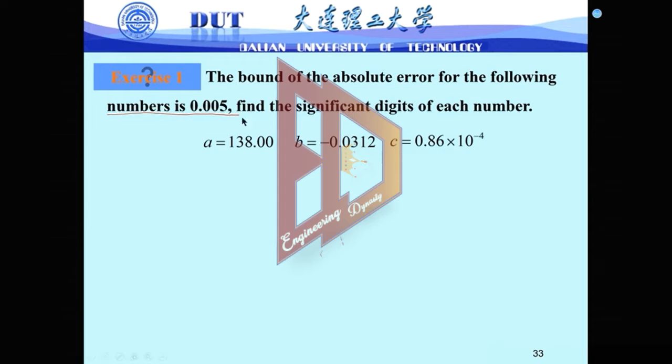Now we only know the error bound. We need to estimate the number of significant digits. So we only have to use the formula.